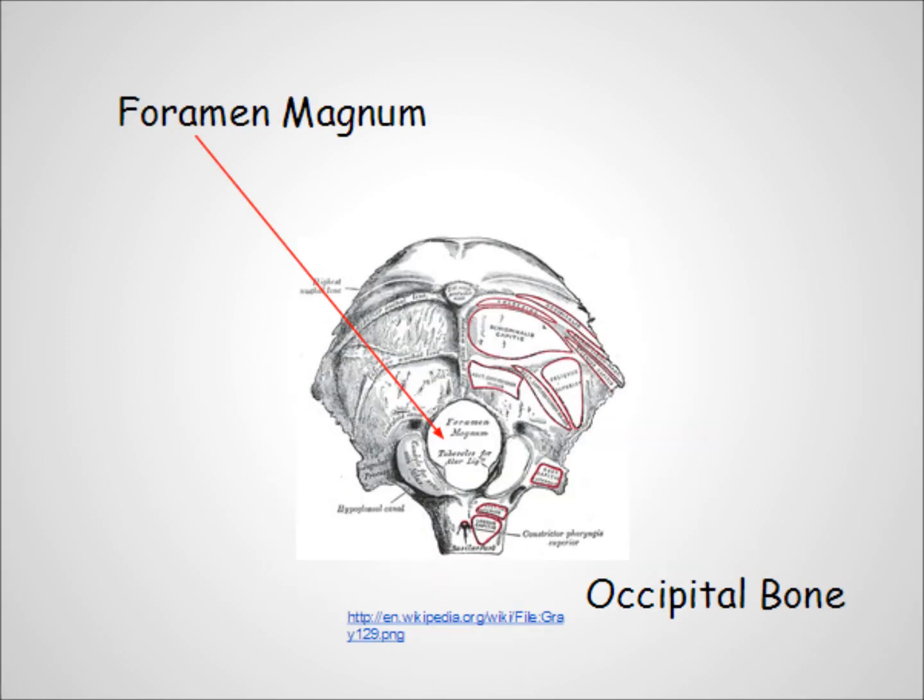The spinal cord passes through a large hole in the occipital bone called the foramen magnum. A foramen is a hole in a bone which allows blood and nerve supply to pass through. All bones have foramina, but the foramen magnum is the largest.